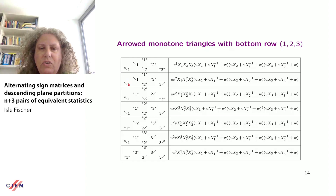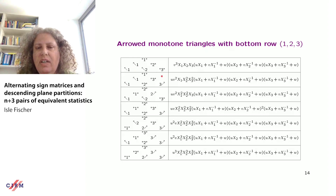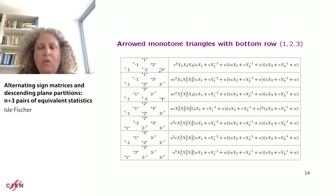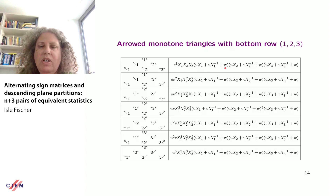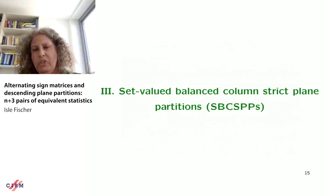For n=3: here you see all monotone triangles with bottom row 1,2,3 with the forced arrows indicated. Where you see stars, you have a choice of three decorations. On the right side you can see the generating function over all arrowed monotone triangles having each particular monotone triangle as its underlying structure.